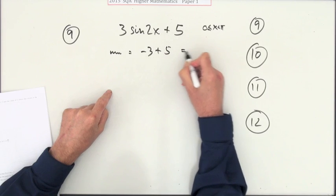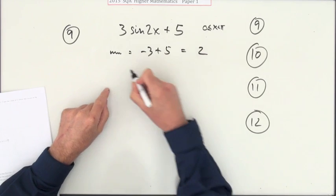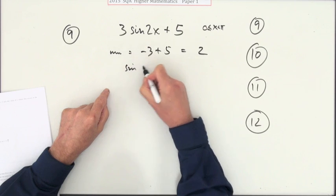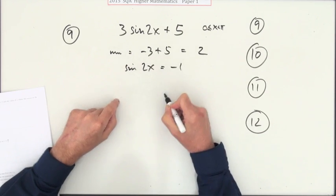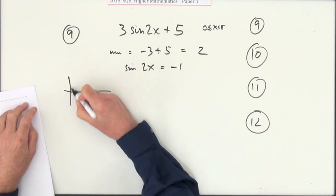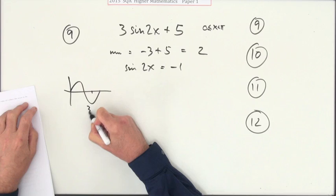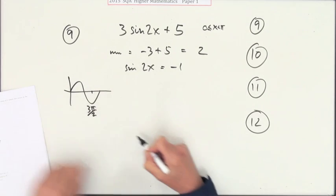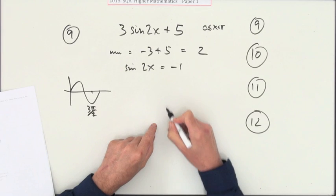That will happen when the sine equals negative 1. When does sine get to negative 1? It gets there at three quarters of the way along, 3π upon 2. That means that angle should be 3π upon 2.